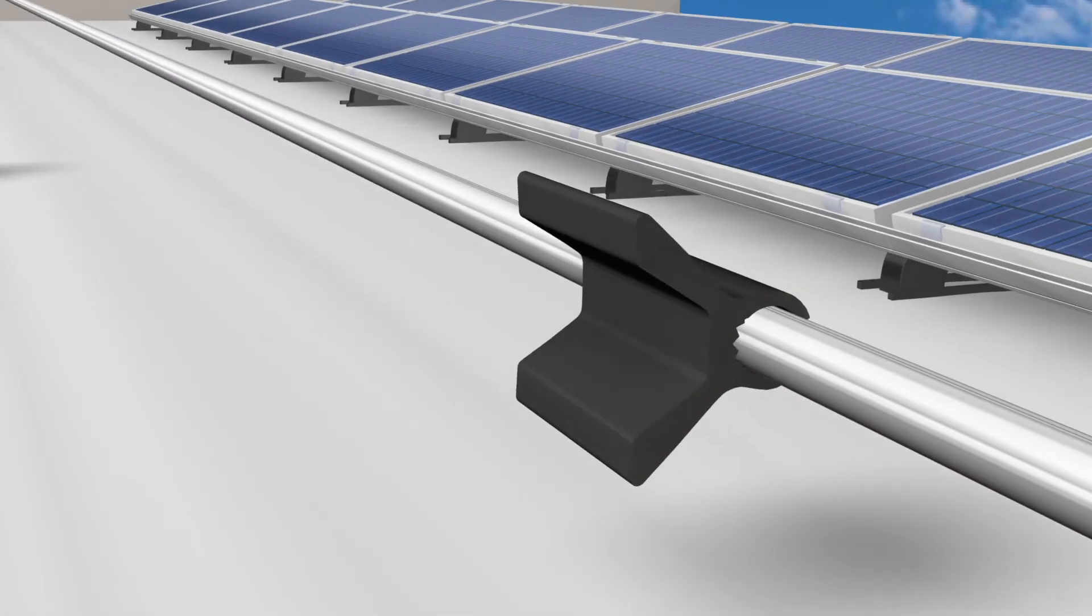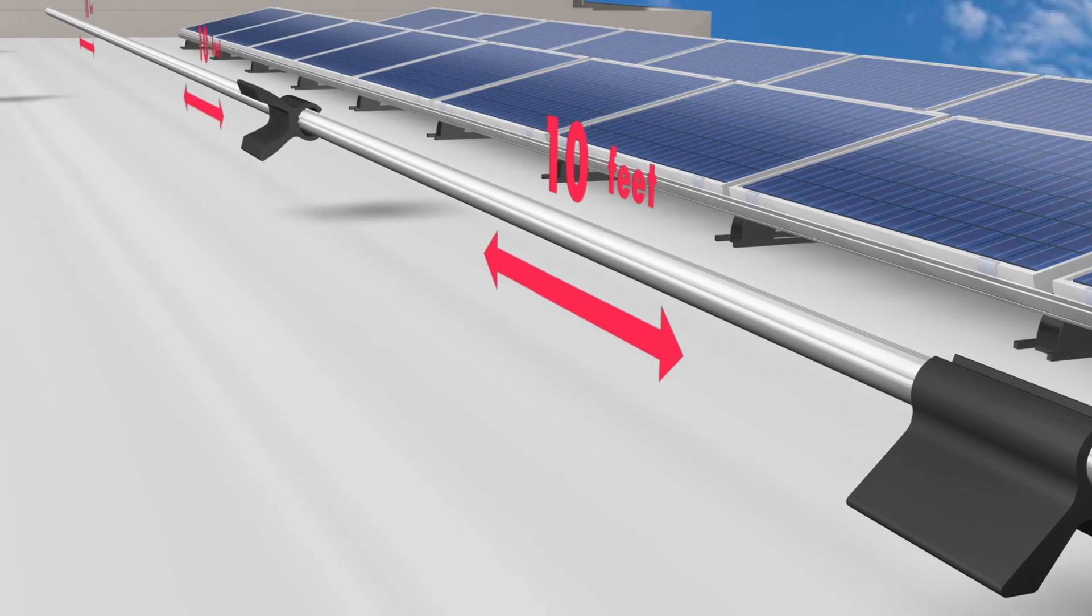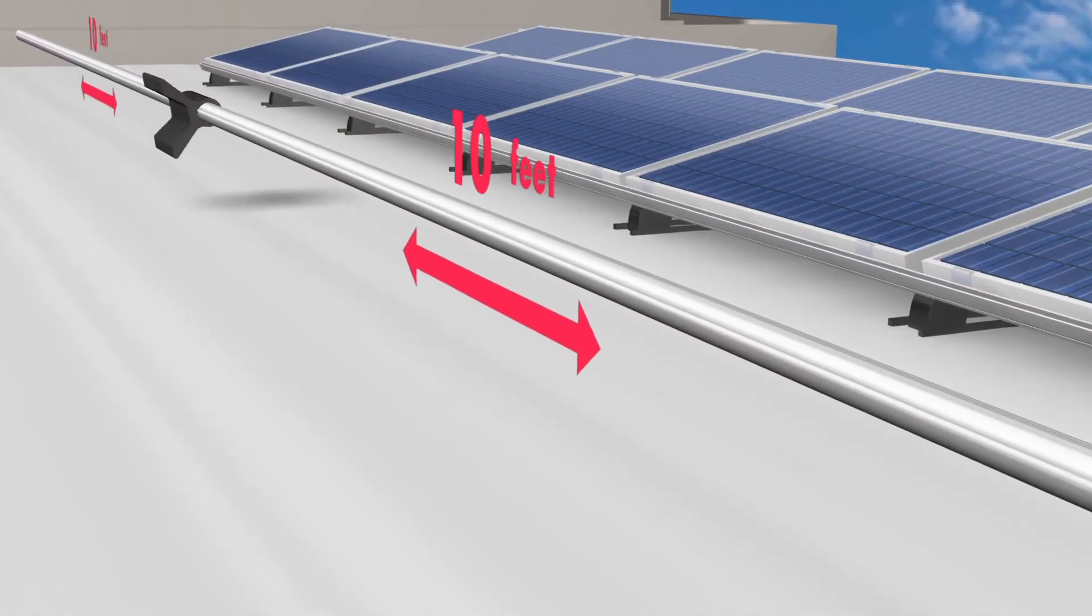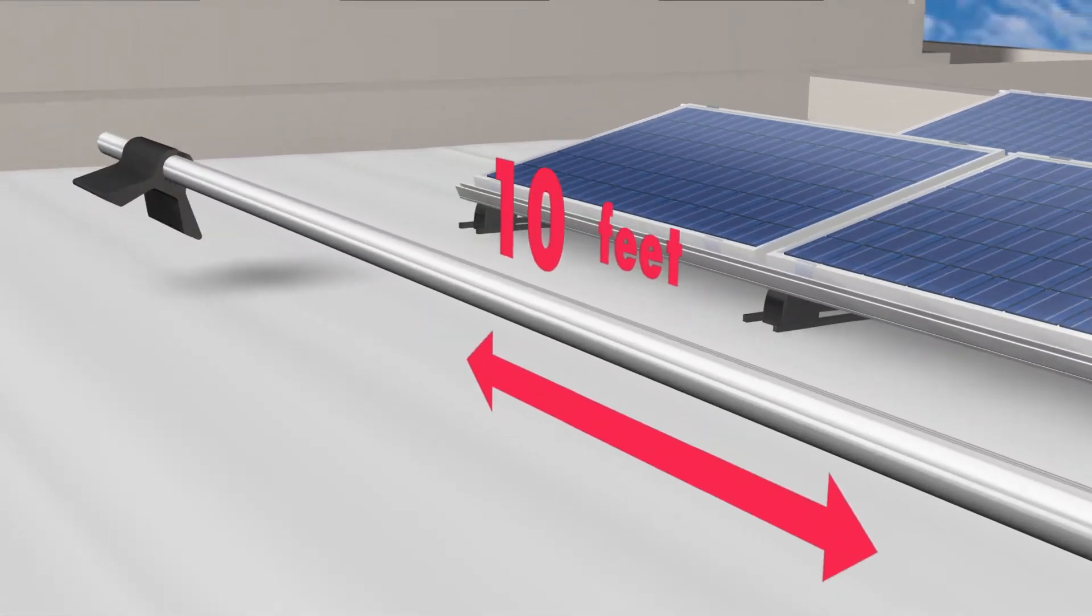PipeGuard units are typically installed every 10 feet and at junctions and elbows, but spacing may vary depending on pipe diameter and application.